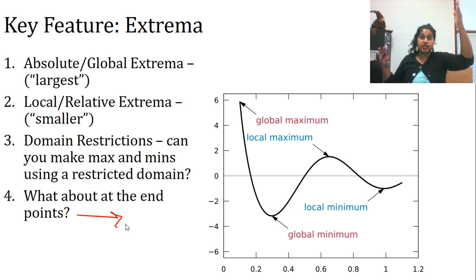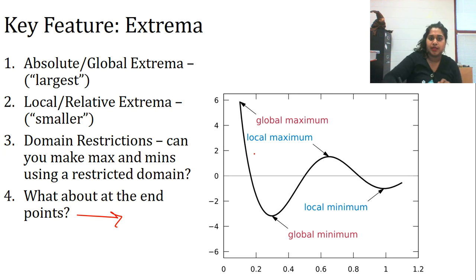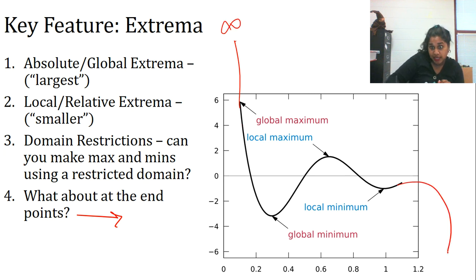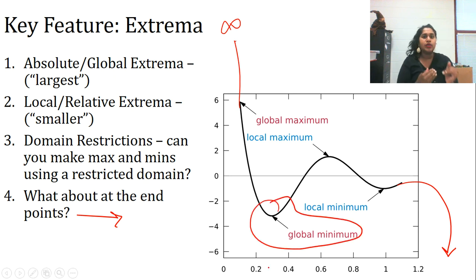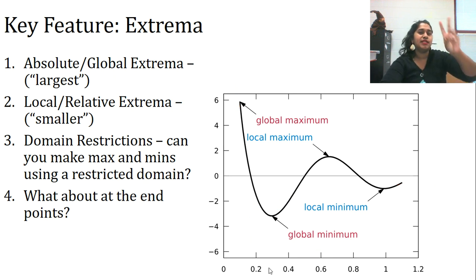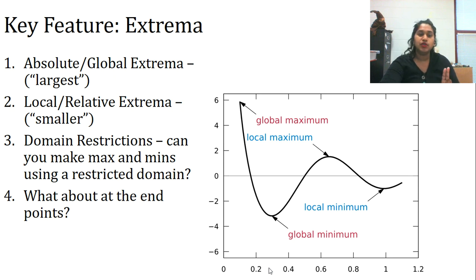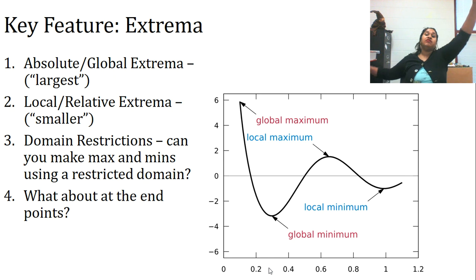If you restrict the domain, absolutely consider the endpoints as true max and min. Even though this max is heading towards an infinite positive bound, this global minimum is the lowest point on the visible graph. It's important to recognize the phrase 'the visible graph' when you have a domain restriction.